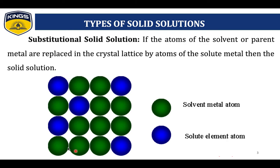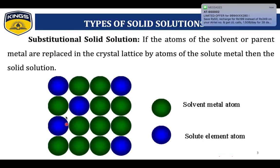Here, let us consider two types of atom: the solvent metal atom and the solute atom. The green color atoms are solvent atoms and blue color are solute atoms. In this crystal structure, the solvent material — the green color atoms — in the first row, second row, third row, and fourth row are replaced by the solute atoms.